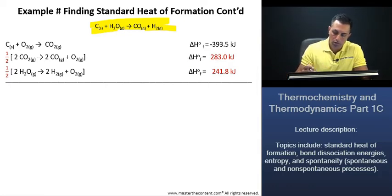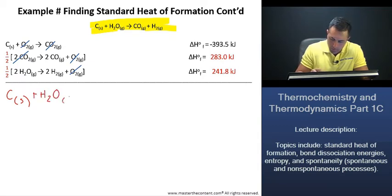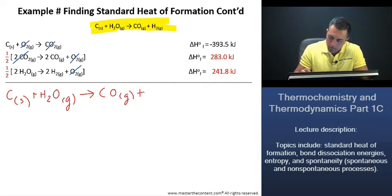If we just go ahead and cross out our like terms as such, and also the carbon dioxide as well, and the H2O as well, we are left with our target reaction. Let's just go ahead and write this out. We just need to write down our carbon monoxide as such, plus our hydrogen gas as follows. What about the standard heat of formation?